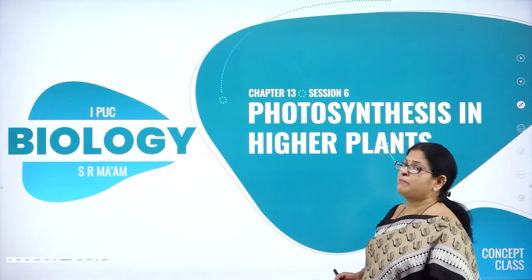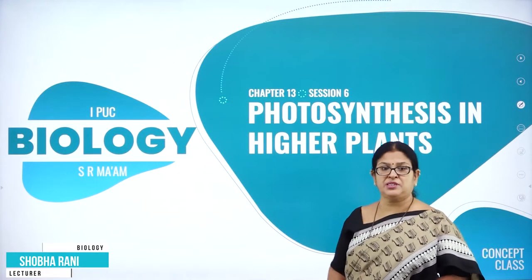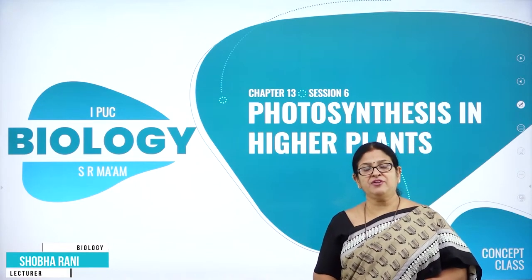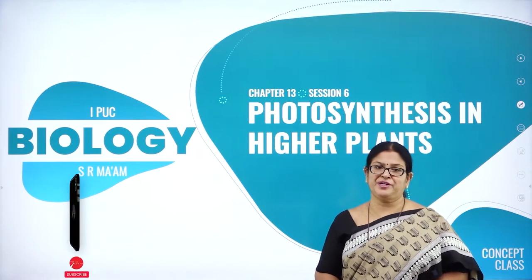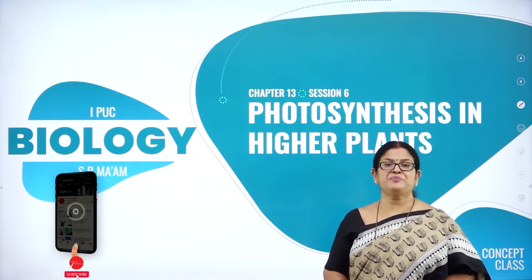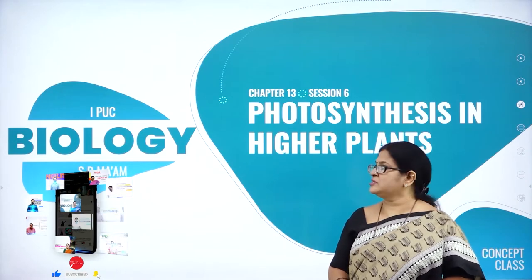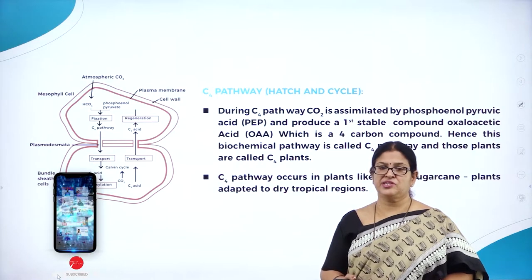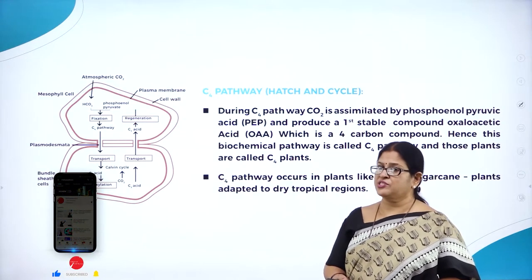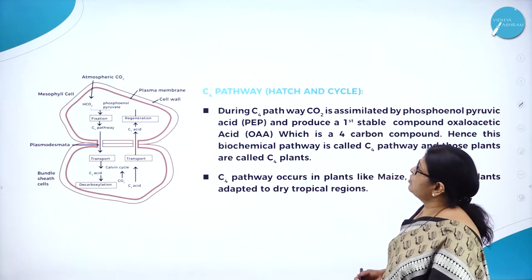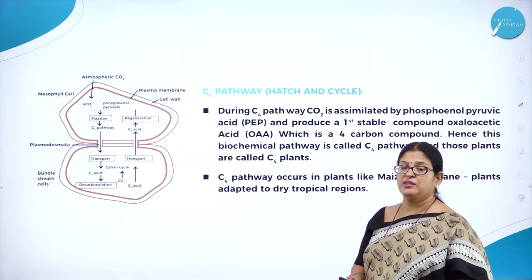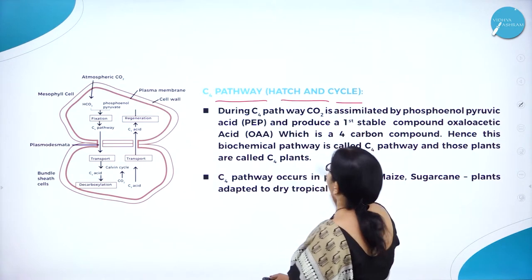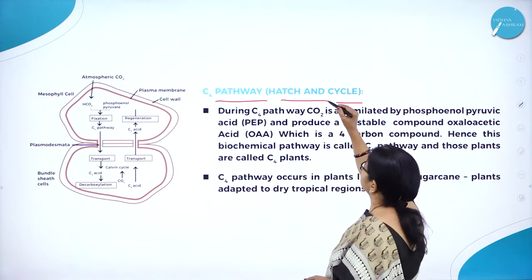Hi everyone, welcome back to session 6 of chapter 13 called photosynthesis in higher plants. I am Bishobarani from the department of biology with the Ashram Pre-university College, the temple of excellence. Hope you remember in the last session we studied about dark reaction, that is the Melvin-Calvin cycle or C3 pathway. So now let us understand about one more pathway that is called C4 pathway, which is also called as Hatch and Slack cycle.